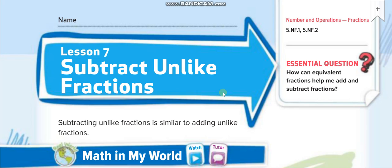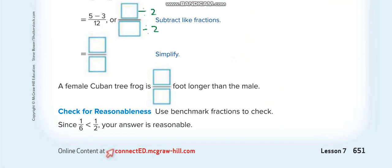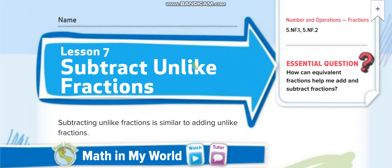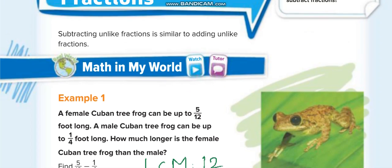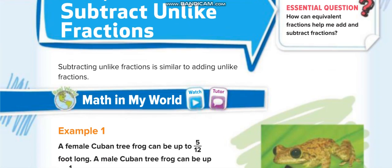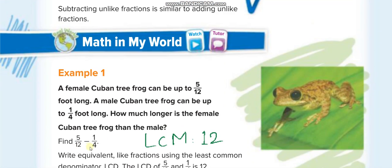Hey everyone, welcome back to my channel 'Learn Math with Mr. Saad' for another video lesson. Today's lesson is Grade 5, Chapter 9, Lesson 7: Subtract Unlike Fractions, page number 651. Unlike fractions are those fractions that have different denominators — when you have the same denominators, those are like fractions.